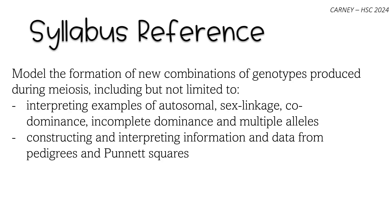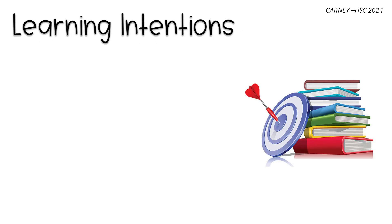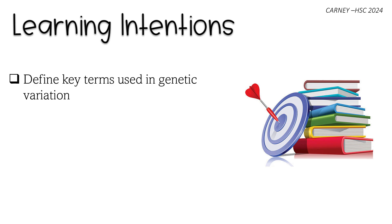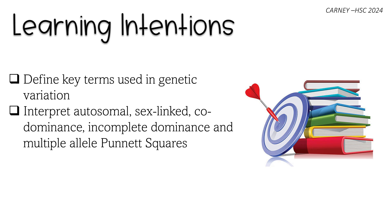Our syllabus reference for this video will model the formation of new combinations of genotypes produced during meiosis, including autosomal, sex linkage, codominance, incomplete dominance and multiple alleles, by interpreting information and data from pedigrees and Punnett squares. Our learning intentions are to define key terms used in genetic variation, interpret autosomal, sex-linked, codominance, incomplete dominance and multiple allele Punnett squares, and interpret pedigree charts.